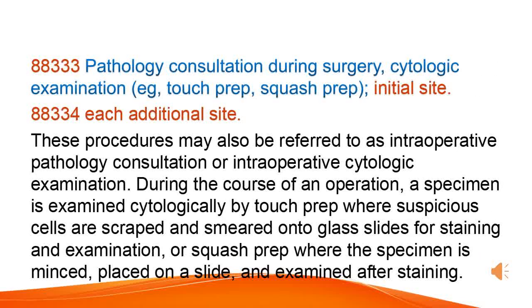Pathology consultation during surgery, cytologic examination, e.g., touch prep, squash prep — initial site; each additional site. These procedures may also be referred to as intraoperative pathology consultation or intraoperative cytologic examination. During the course of an operation, a specimen is examined cytologically by touch prep, where suspicious cells are scraped and smeared onto glass slides for staining and examination, or squash prep, where the specimen is minced, placed on a slide, and examined after staining.